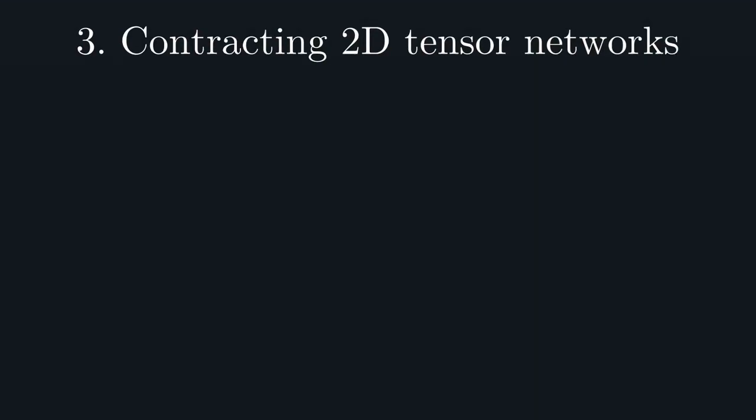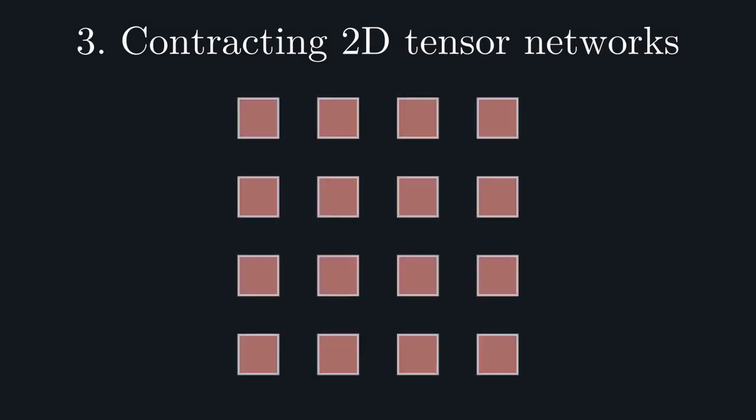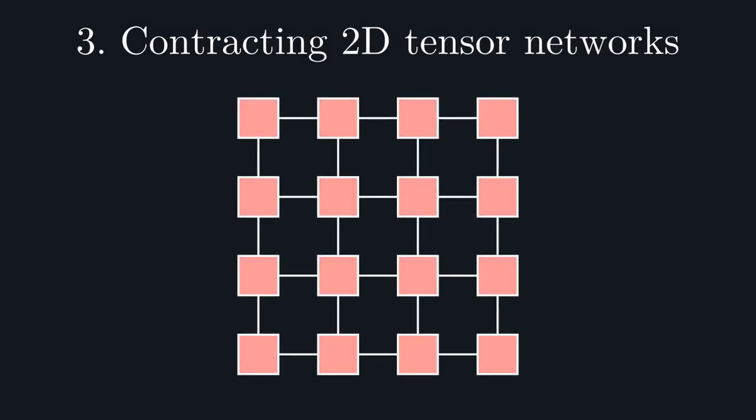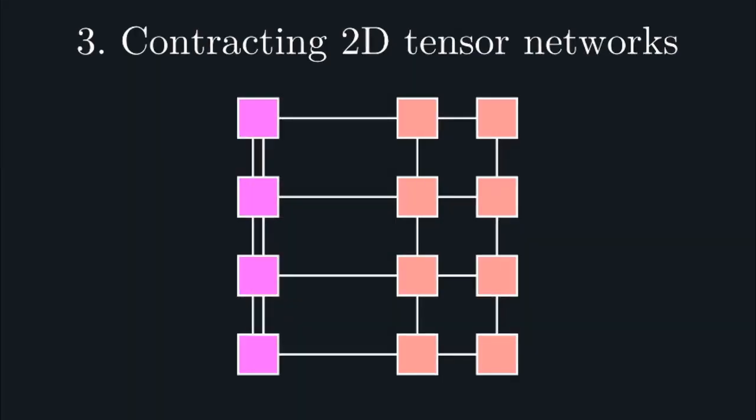So, let's see how this algorithm works. Suppose we have a square lattice tensor network. We start by interpreting the leftmost column of this network as an MPS. Next, we can consider pairing up the tensors in the MPS with those in the next column, and contracting them together. In doing so, we can see that the dimension of these bonds has grown. Specifically, the dimension is squared.